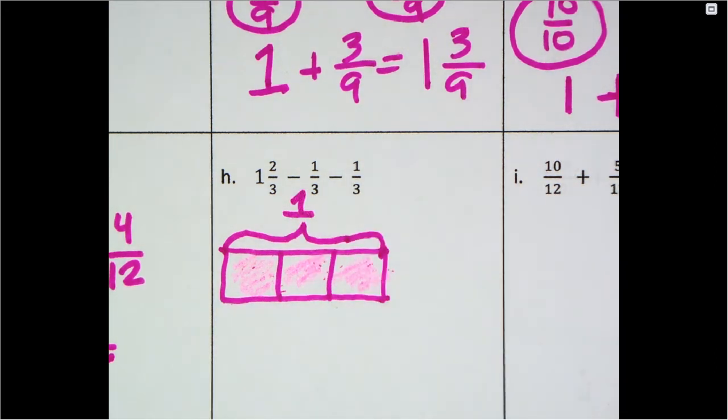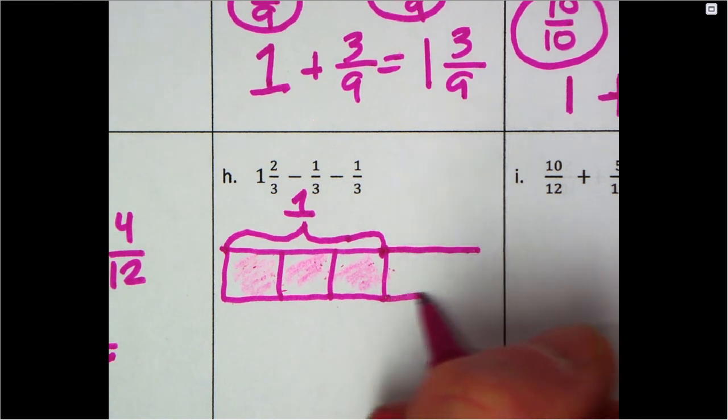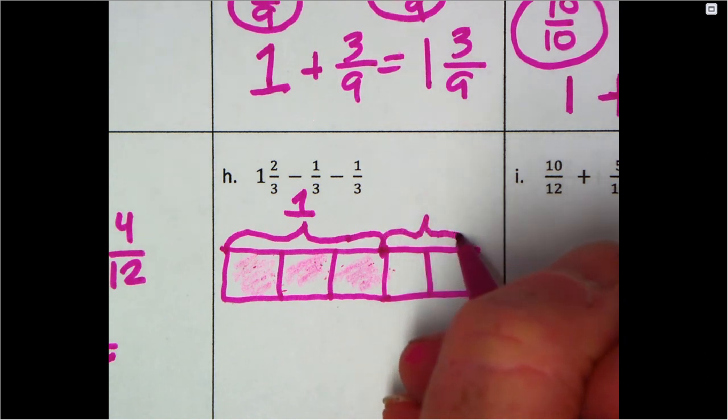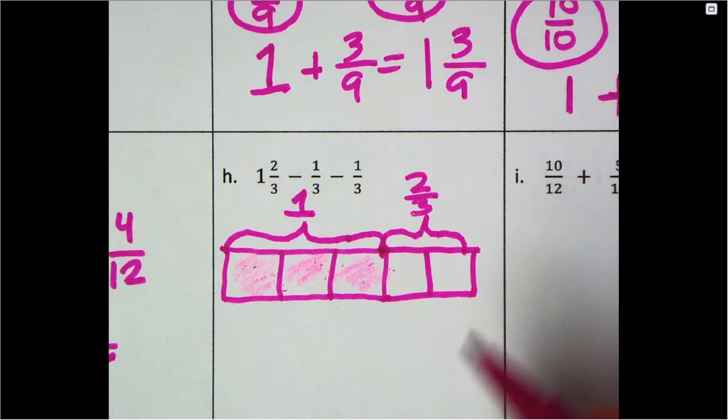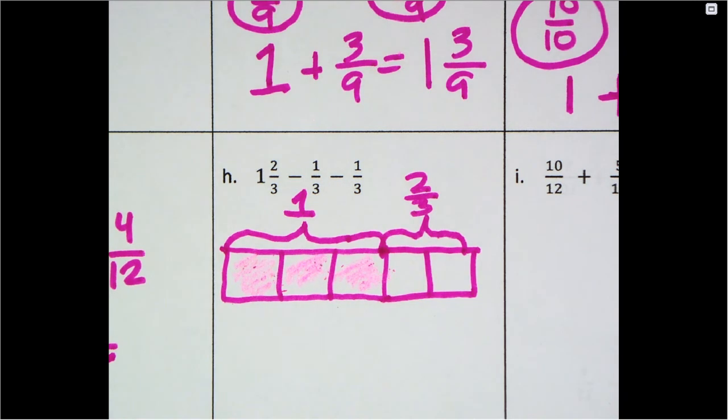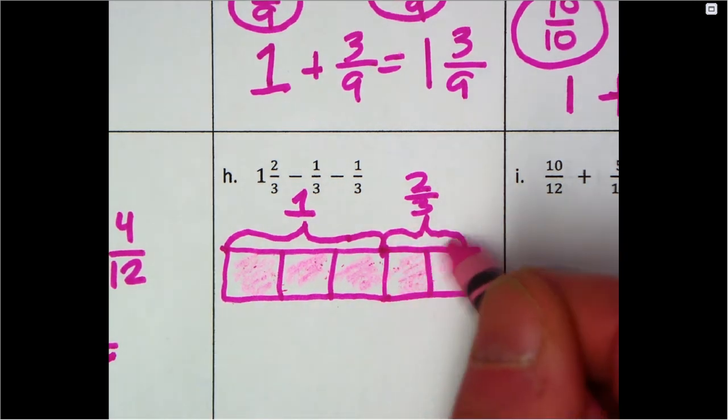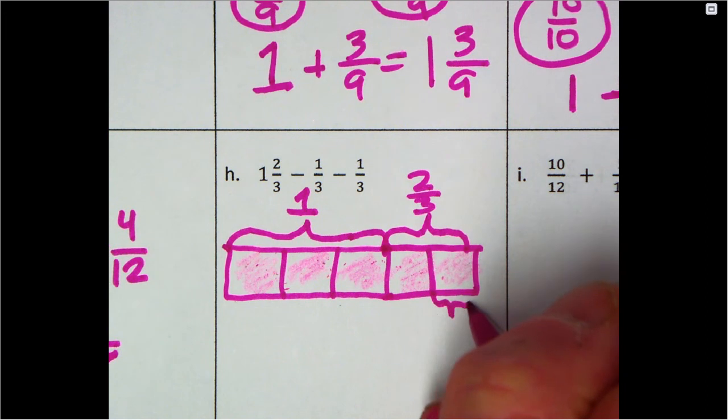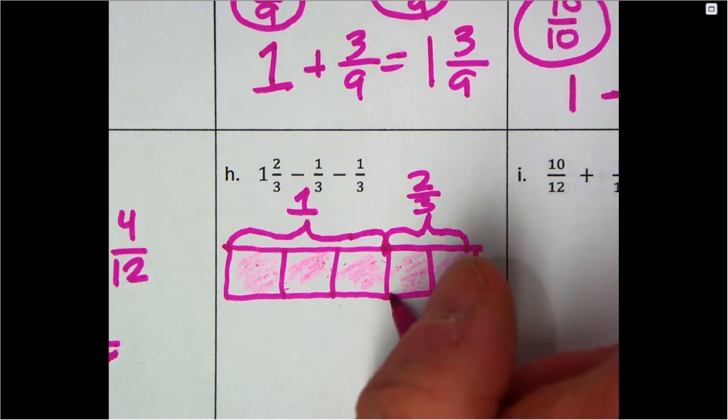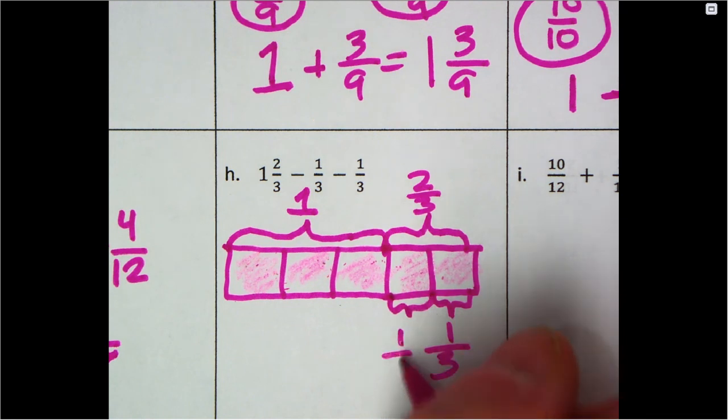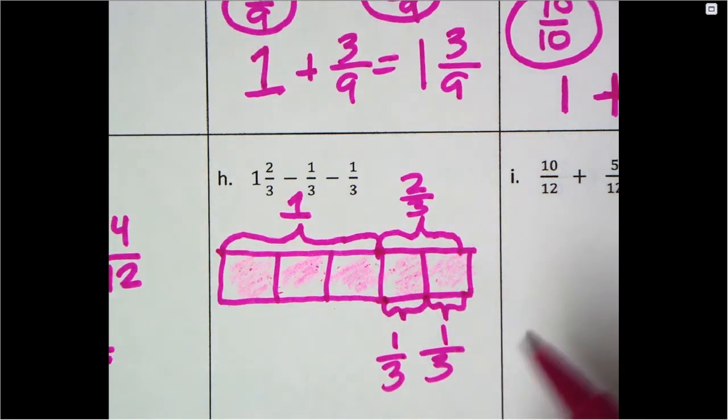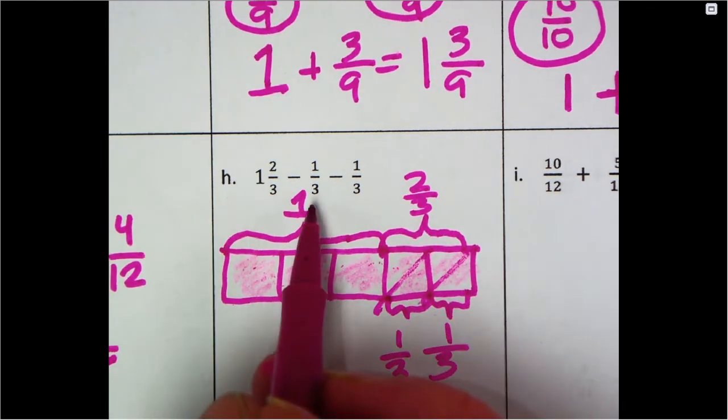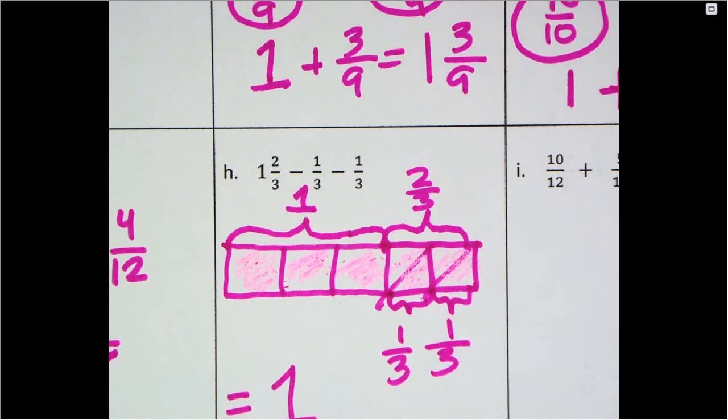Two thirds, two thirds. So we have 1 and 2/3. What are we subtracting? Well, first of all we're subtracting 1/3, and then we're subtracting another third. So what are we left with after we subtract these two? We're left with one. So 1 and 2/3 - 1/3 - 1/3 equals one whole. How about that?